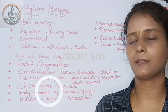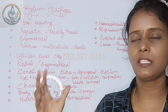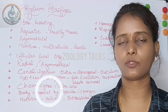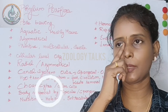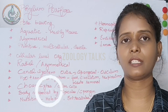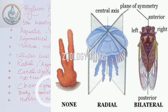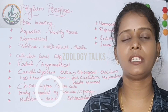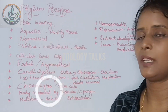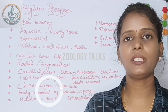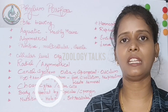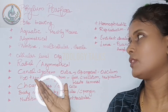Porifera organisms have notable characteristics. An important question is: what is the symmetry? We draw an imaginary line — if it gives two equal halves, that is bilateral symmetry. However, Porifera are asymmetrical — they have an uneven shape with no such imaginary line dividing them equally.